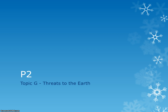Next up in our exploration of space is topic G, which is entitled Threats to the Earth. There are actually three little sections to this one. The first bit is how is the Moon formed? The second was a little bit on comets, but most of it we've already talked about. And the final bit is on what we call NEOs, or near-Earth objects. And those are the bits that are the threats to the Earth.